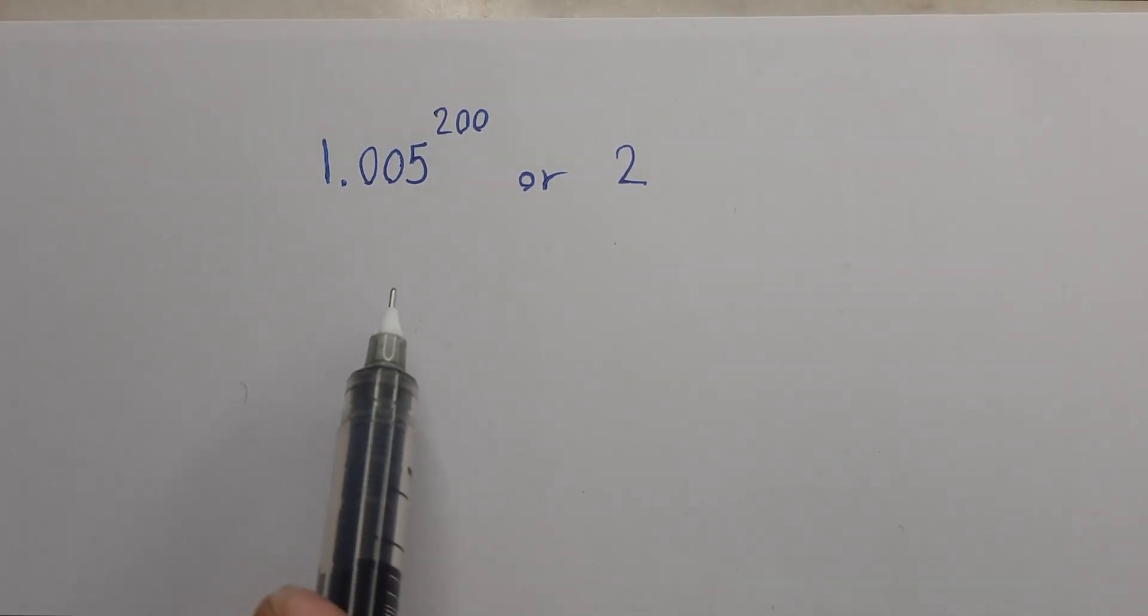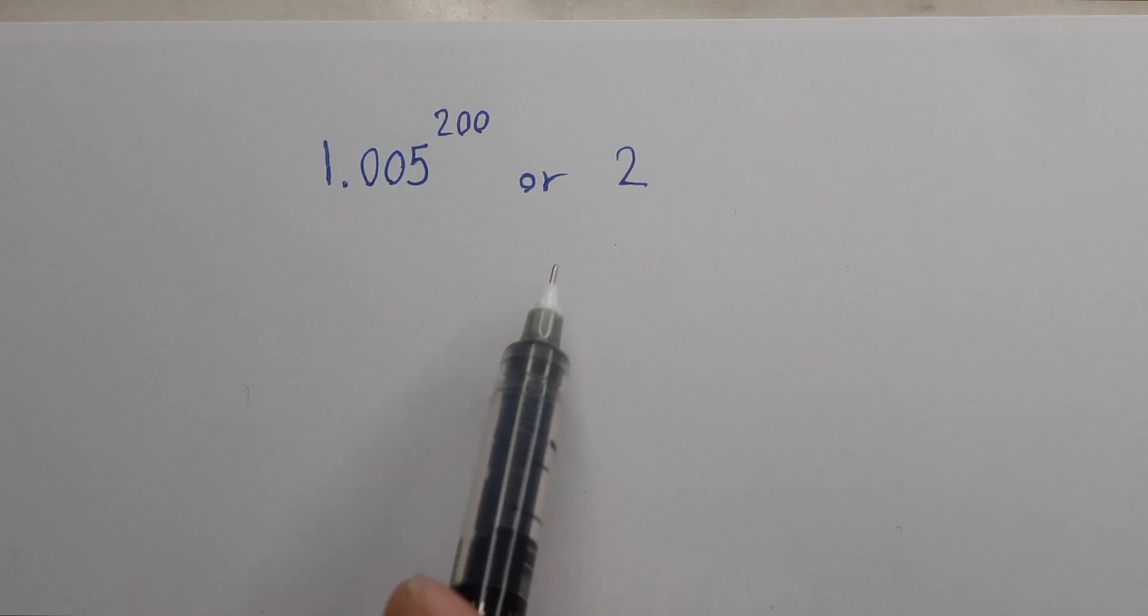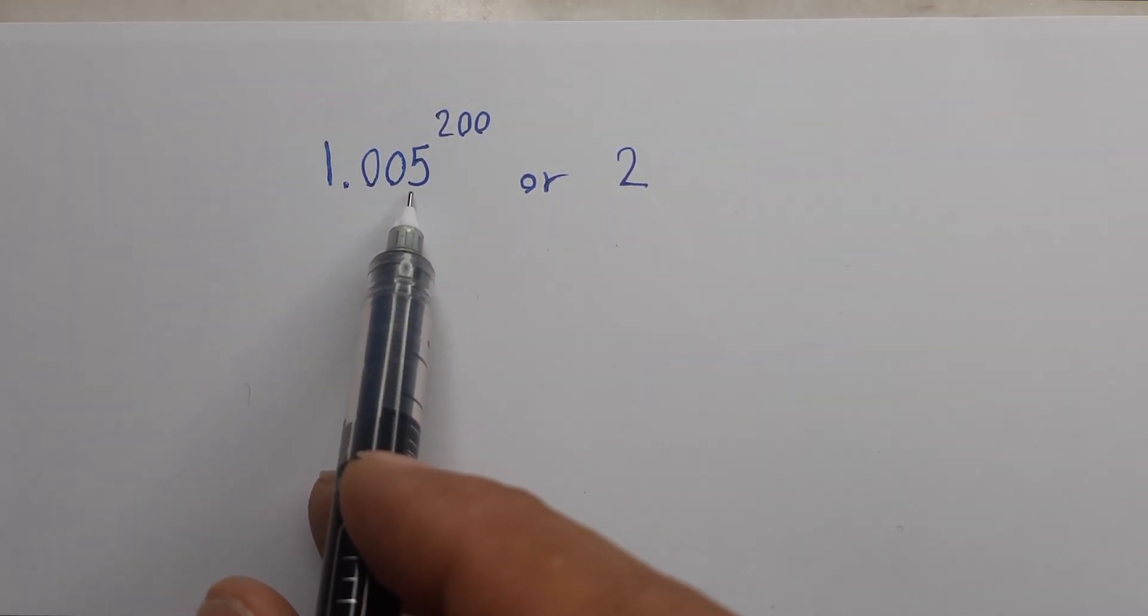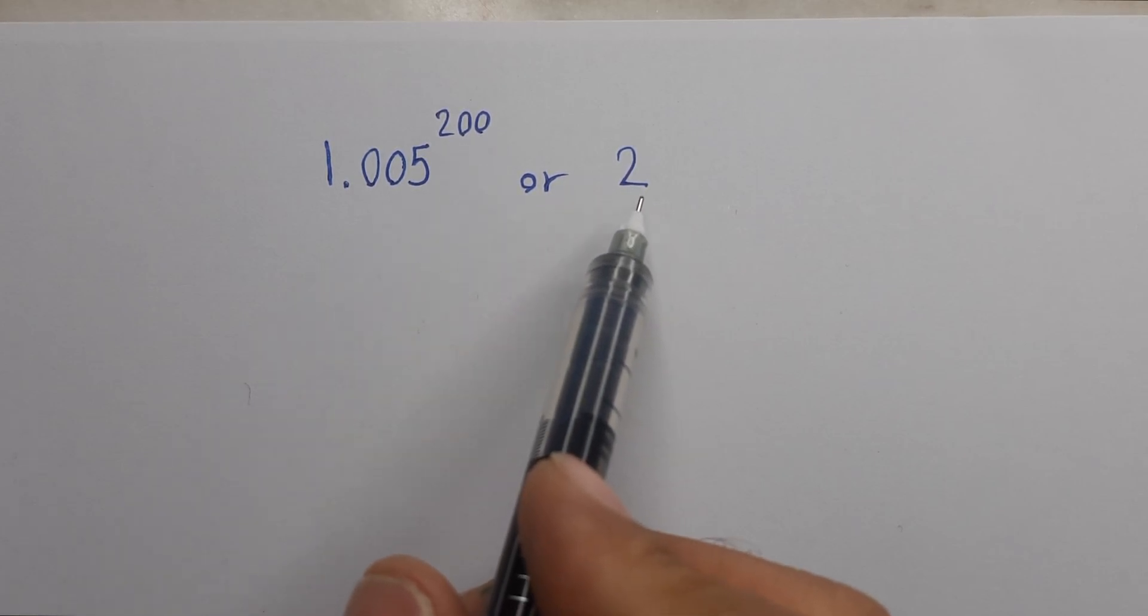Everyone, we have an Olympiad question: which is larger, 1.005^200 or 2?